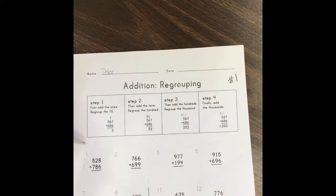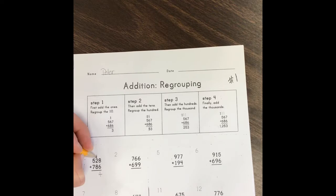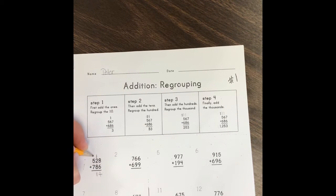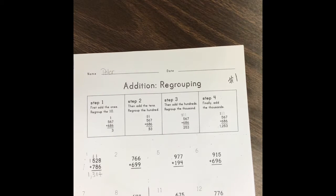Let's try an example on our own. Number one: five hundred twenty-eight plus seven hundred something. Eight plus six is fourteen — put our four in our ones place and move our ten to our tens place. Two plus eight is ten, plus one is eleven. Move our one in our tens place and our other one into our hundreds place. Five plus seven is twelve plus an additional one, making it thirteen. With another one in our thousands place, our answer becomes one thousand three hundred fourteen. Pause the video here and finish the page at your own pace at home.